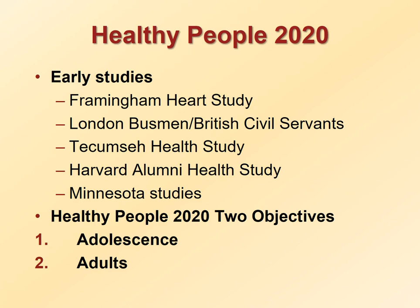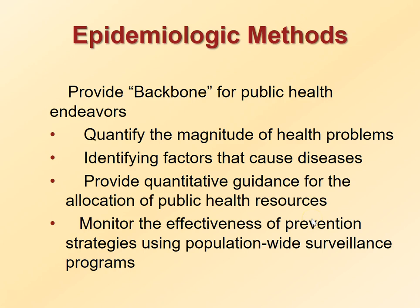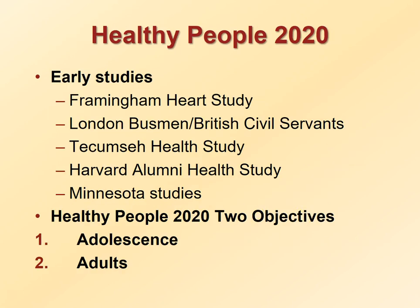Here are two objectives of Healthy People 2010 for adolescents. First, increase the proportion who engage in vigorous physical activity that promotes cardiorespiratory fitness three or more days per week for 20 or more minutes per occasion. Second, increase the proportion who engage in moderate physical activity for at least 30 minutes on five or more of the previous seven days.